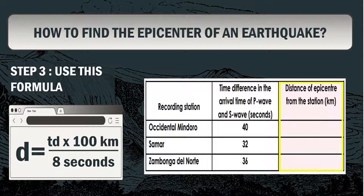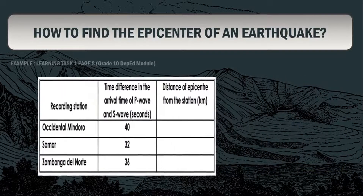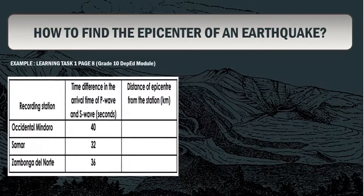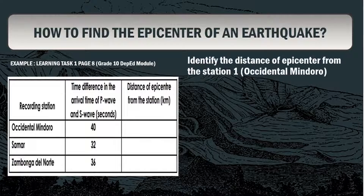The formula D = TD × 100 km ÷ 8 seconds is used to identify the distance of the epicenter from the station. It is suited because 8 seconds is the interval between the arrival times of the P wave and S wave at a distance of 100 kilometers.